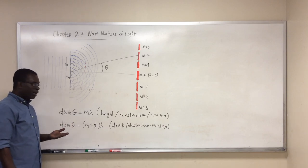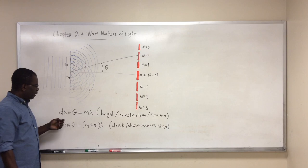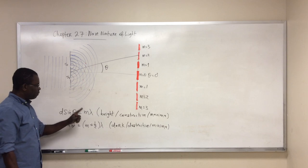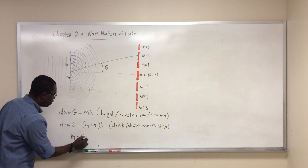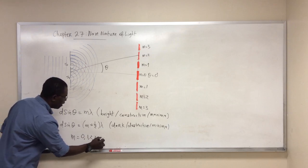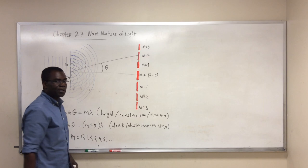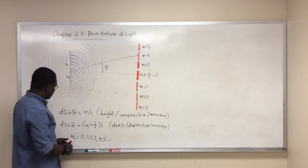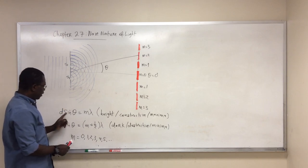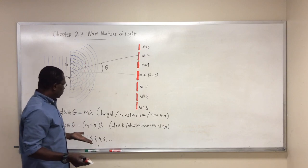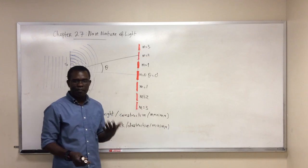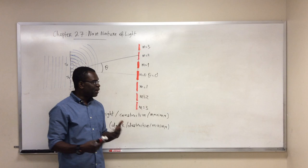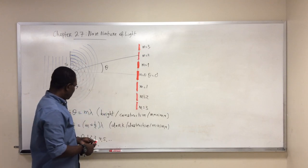If you're given a problem on Young's double slit experiment, there are four elements: d, theta, m, and lambda. m takes on the values 0, 1, 2, 3, 4, 5. Given a problem, you're likely going to be given three of these and the question will say find the fourth. So these are pretty straightforward problems.